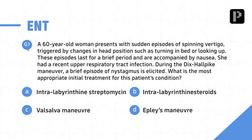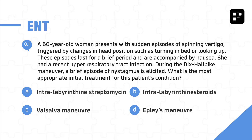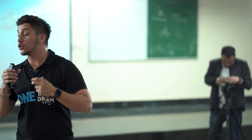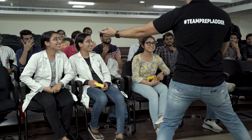ENT question: a 60-year-old woman presents with sudden episodes of spinning vertigo triggered by changes in head position, such as turning in bed or looking up. Episodes last briefly and are accompanied by nausea. She had a recent upper respiratory tract infection. During the Dix-Hallpike maneuver, a brief episode of nystagmus is elicited. What is the most appropriate initial treatment? Answer: D — Epley maneuver. Apple maneuver — Epley maneuver. Congratulations, Gagan! Before starting, the crowd favorite was Gagan, and we also have the twins. Medical Marvels versus the twins — let's see who wins.